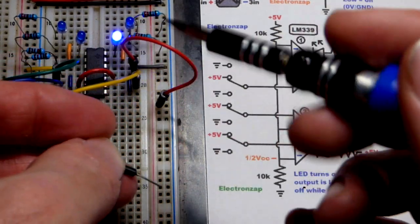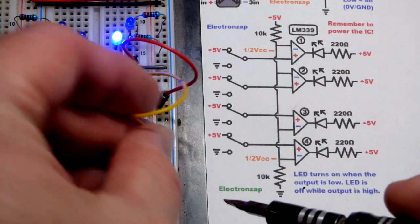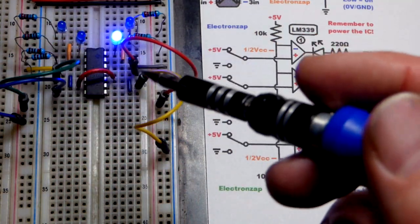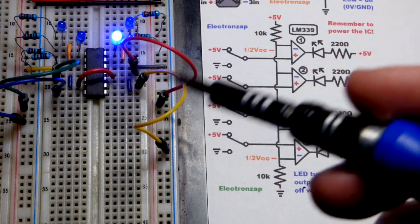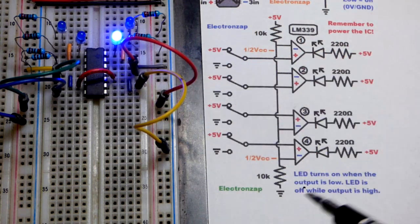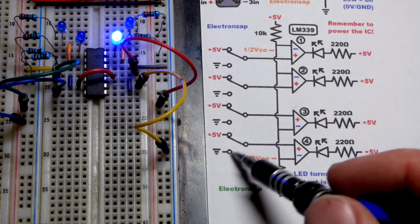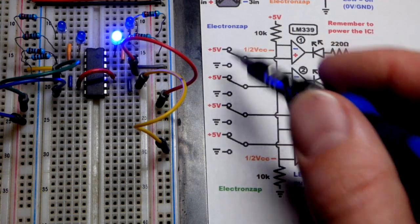Right now it's floating. It's picking up stray signals that actually turn it on and off rapidly. So it's partially bright, mostly because it's turning on and off. Sometimes it's off, so it's not as bright. Now we go to a negative supply.